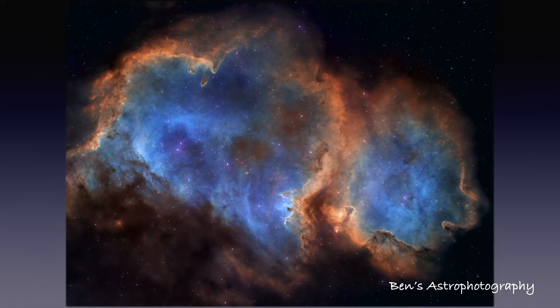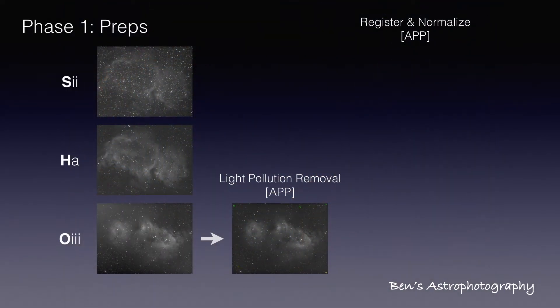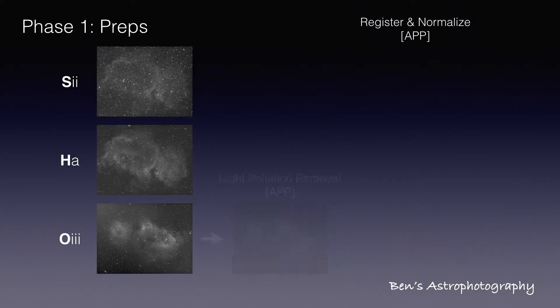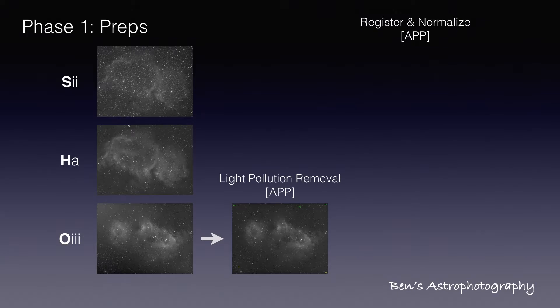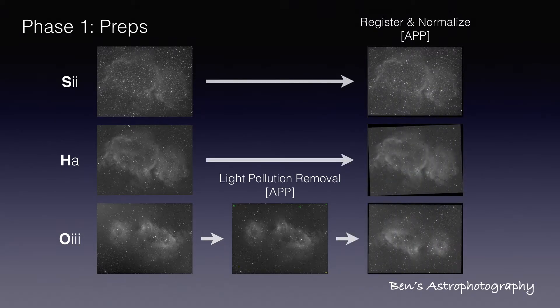So here, let me explain my workflow in a bird's eye view. First phase — I call it preps. I start from stacked SHO masters. The O3 master usually has some light pollution, so I get rid of it in Astro Pixel Processor, APP for short. Then I register and normalize all three masters to make sure they are aligned and have a neutral background.